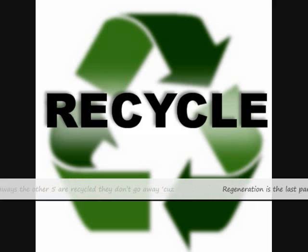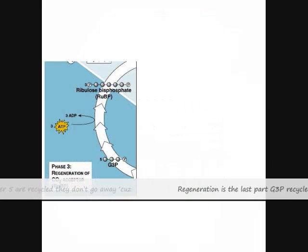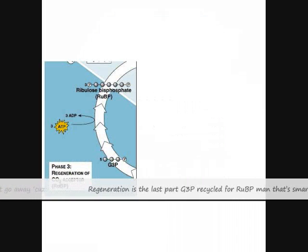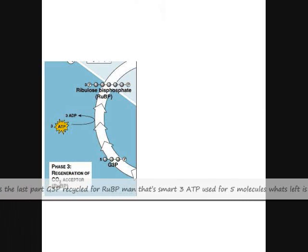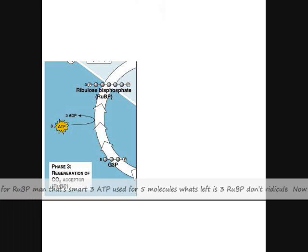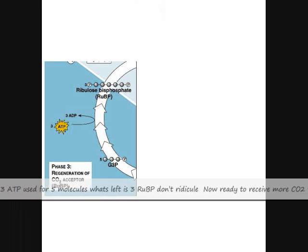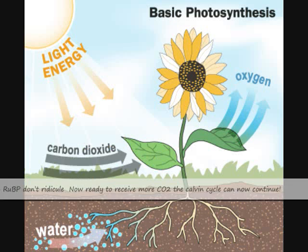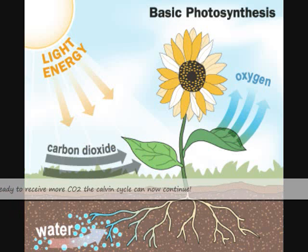Regeneration is the last part — G3P is recycled to make RuBP, man that's smart! Three ATP used for five molecules; what's left is three RuBP. Now ready to receive more CO2, the Calvin cycle can now continue.